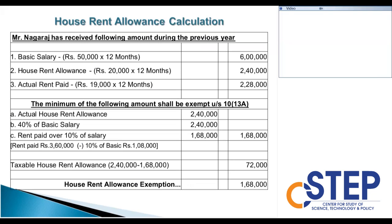Now we will go to the house rent allowance calculation. If anyone is receiving a basic salary of 50,000 per month, the annual basic salary is 6 lakh. 40% of basic salary is 20,000 per month, which is 2,40,000 annually. If the employee pays actual rent of 19,000 per month, that is 2,28,000 annually.